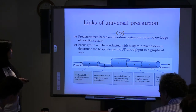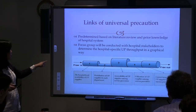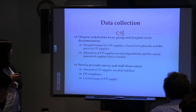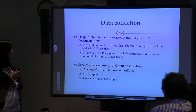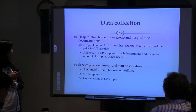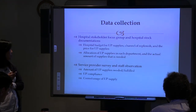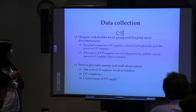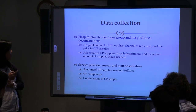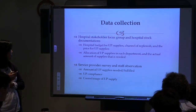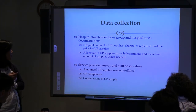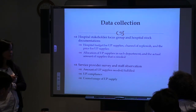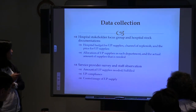Once the pipeline links are determined, each link is quantified using different methods. Hospital stakeholder focus groups combined with hospital stock documentation will quantify the hospital budget for universal precaution supplies, channel of replenishment, price, and allocation to each department. This generates hospital and department-level data. For the individual-level data, a service provider survey combined with staff observation will quantify the amount of supplies needed versus fulfilled, actual universal precaution compliance, and correct usage.